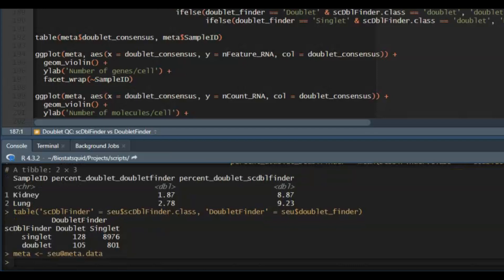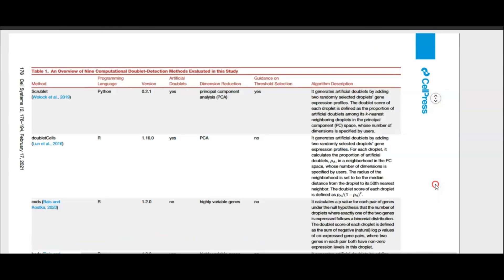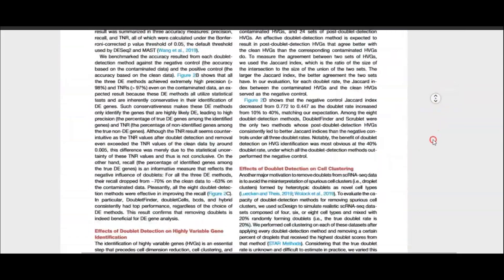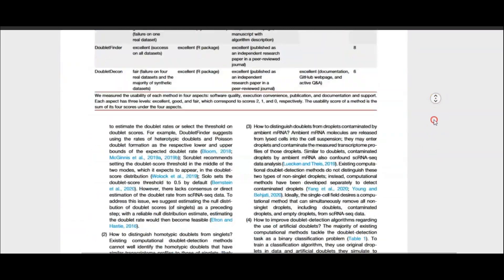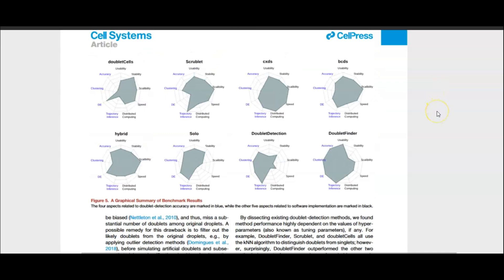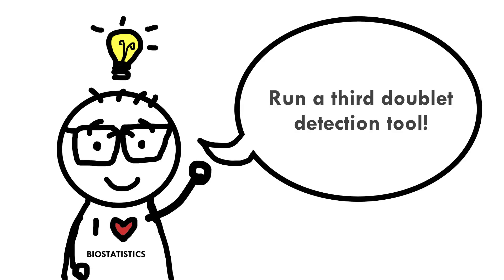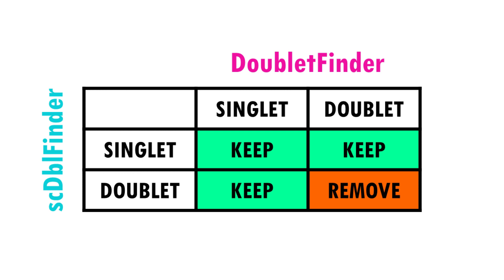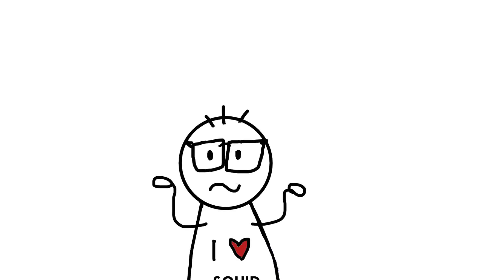There are several things that can help you decide. There are benchmarking papers that compare different doublet finding tools by running them on a dataset with known ground truth and give you stats on accuracy, so that might help you trust one tool more than another. You can also run a third doublet detection tool and get the consensus of the three, or you can decide to be more lenient — if at least one tool says it's a singlet then you keep that cell — or be more stringent, meaning that if at least one tool classifies a cell as a doublet you remove it. It also depends on how many cells you have originally and how many you're willing to remove. So there's not really a right answer — it depends very much on your dataset.